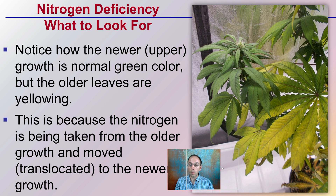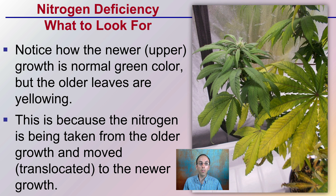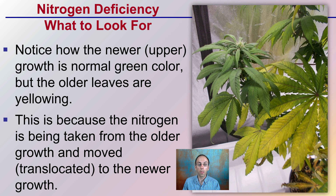Now, looking specifically at those yellowing leaves — notice how the upper leaves here have a normal green color and the older leaves are yellowing. This plant is exhibiting a more advanced form of nitrogen deficiency. We can see that the green color is being pushed to the newer growth. Because nitrogen is a mobile nutrient, it's moving from the older leaves and being translocated through the plant to the newer growth.